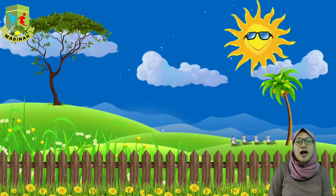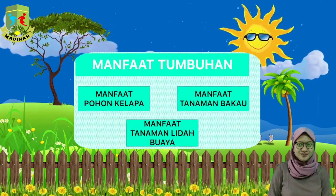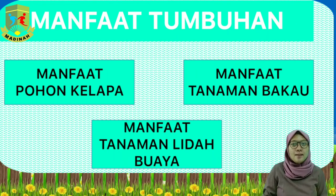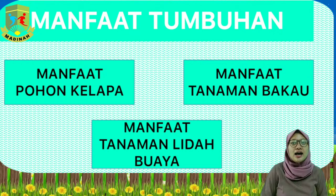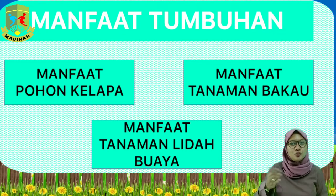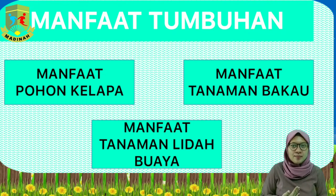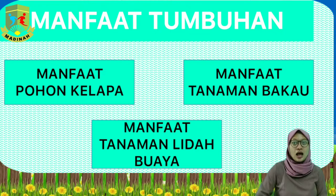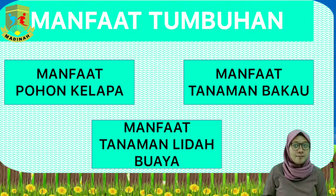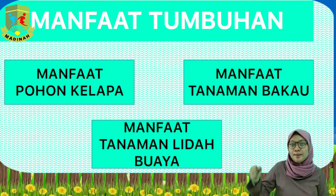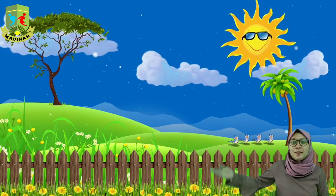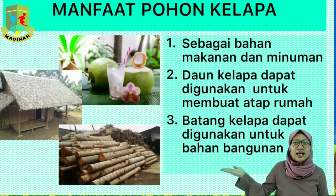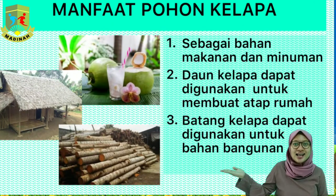Tumbuhan pertama adalah pohon kelapa. Seperti yang kita tahu, pohon kelapa dapat kita manfaatkan sebagai bahan makanan dan minuman. Yang kedua, daun pada pohon kelapa dapat kita manfaatkan sebagai pembuatan atap rumah. Manfaat yang ketiga, batang pohon kelapa dapat kita gunakan sebagai bahan untuk mendirikan bangunan. Seperti ini adalah gambar pohon kelapa yang kita manfaatkan dalam kehidupan sehari-hari.